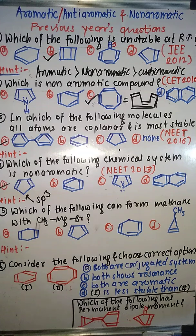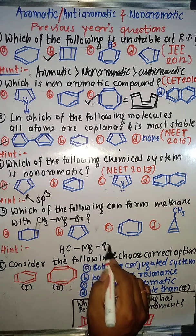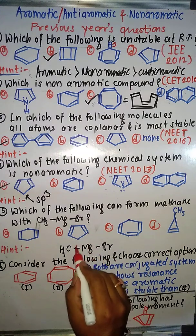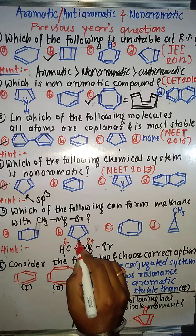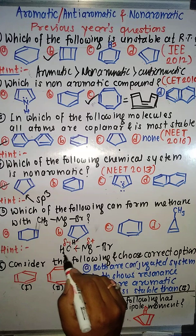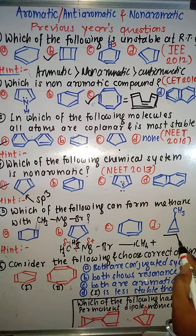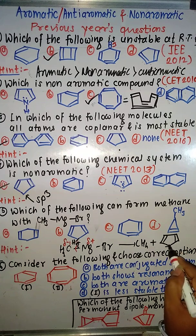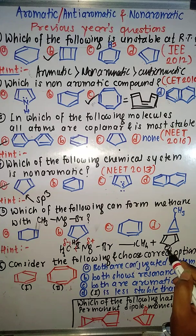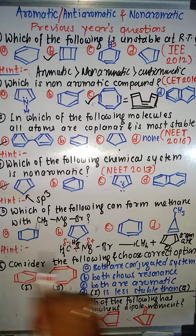Which of the following can form methane with CH3MgBr, that is methyl magnesium bromide — the Grignard reagent? In a Grignard reagent, the metal always gets a positive charge and the non-metal gets a negative charge — carbon being non-metal, magnesium being metal. In this case, a particular hydrogen is acidic. Generally hydrocarbon hydrogen is not acidic, but in this case it is acidic. The base CH3⁻ will extract this hydrogen.